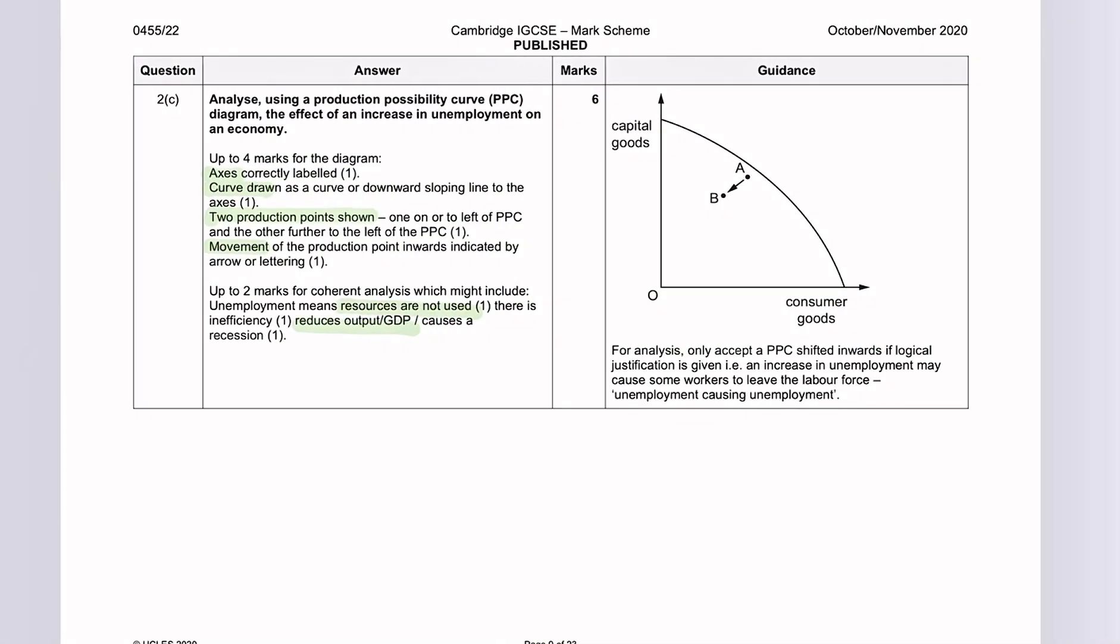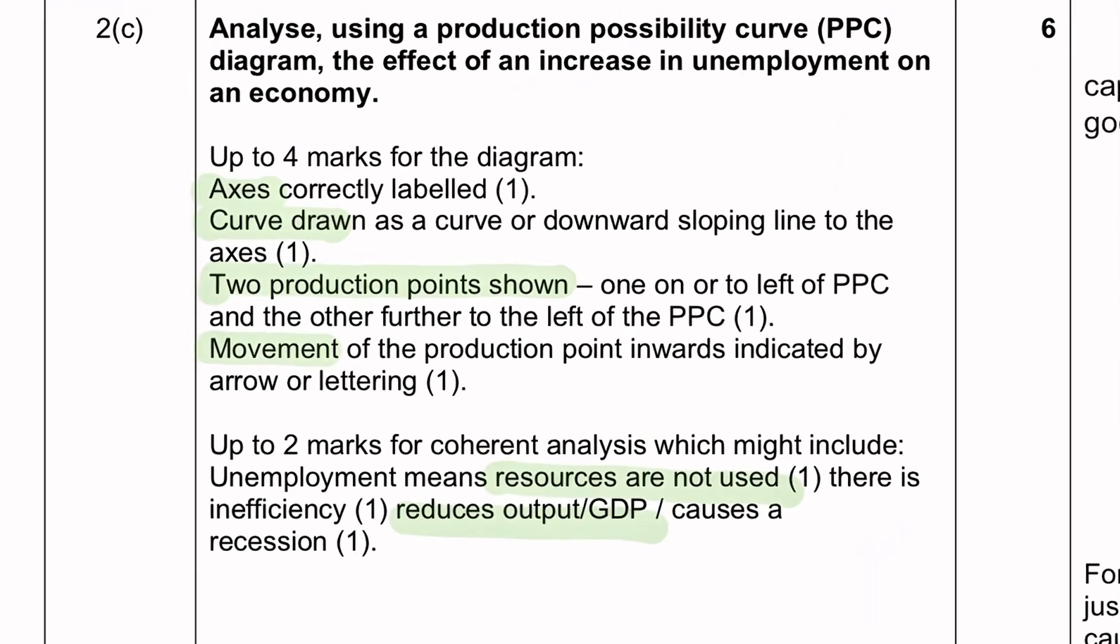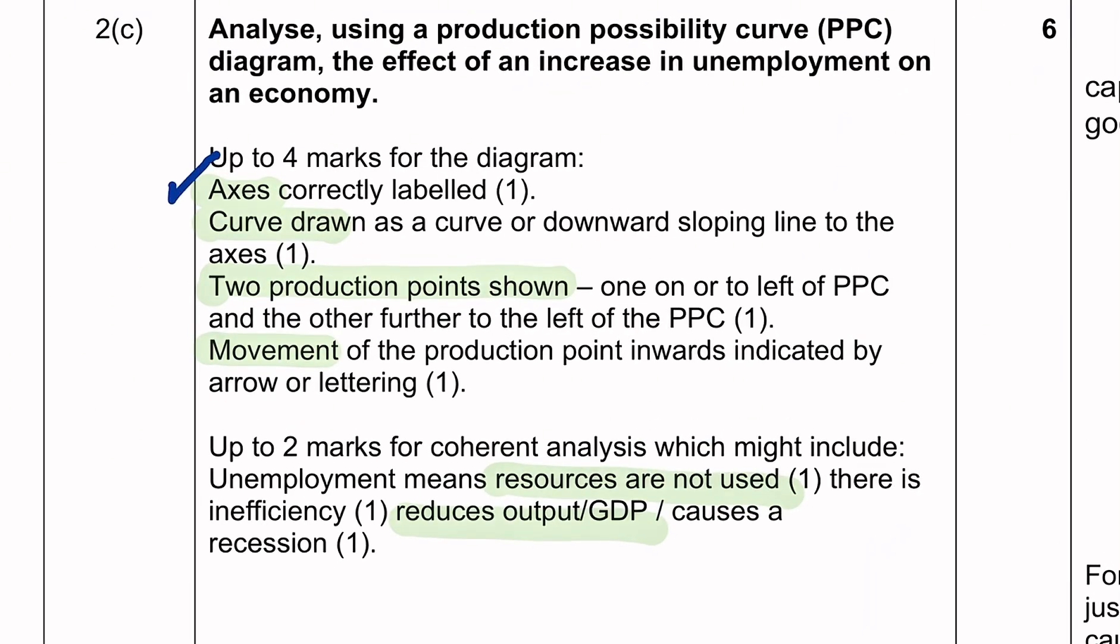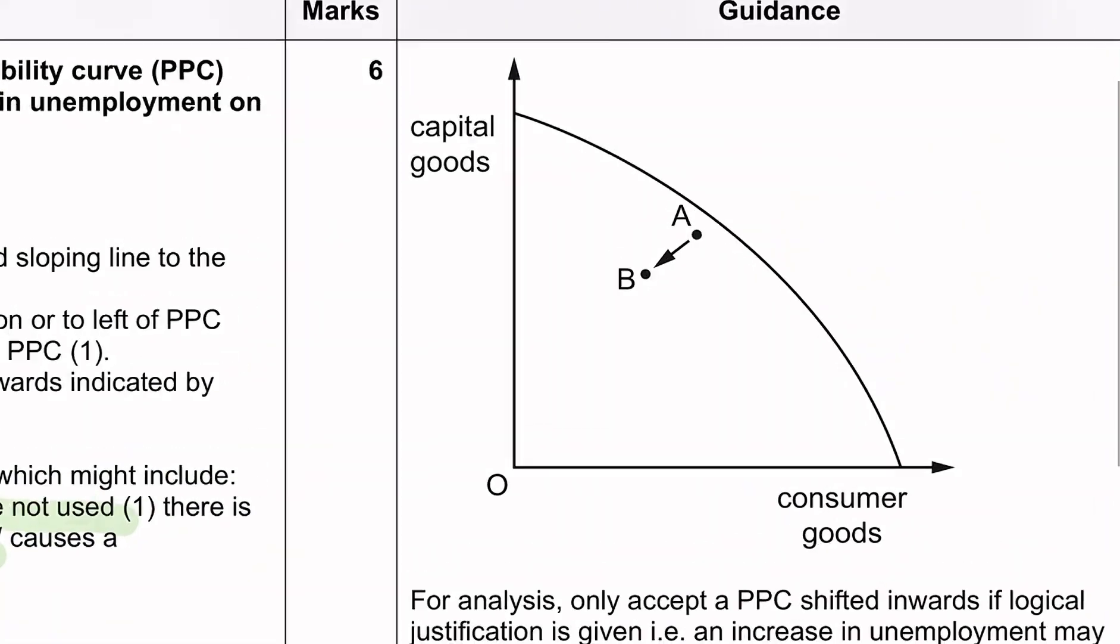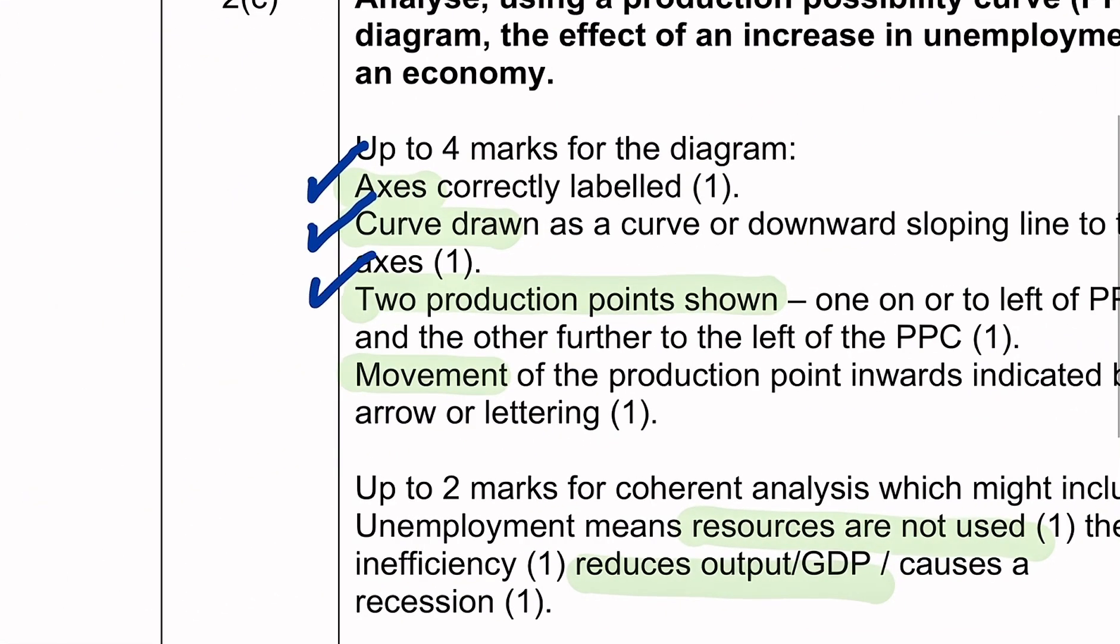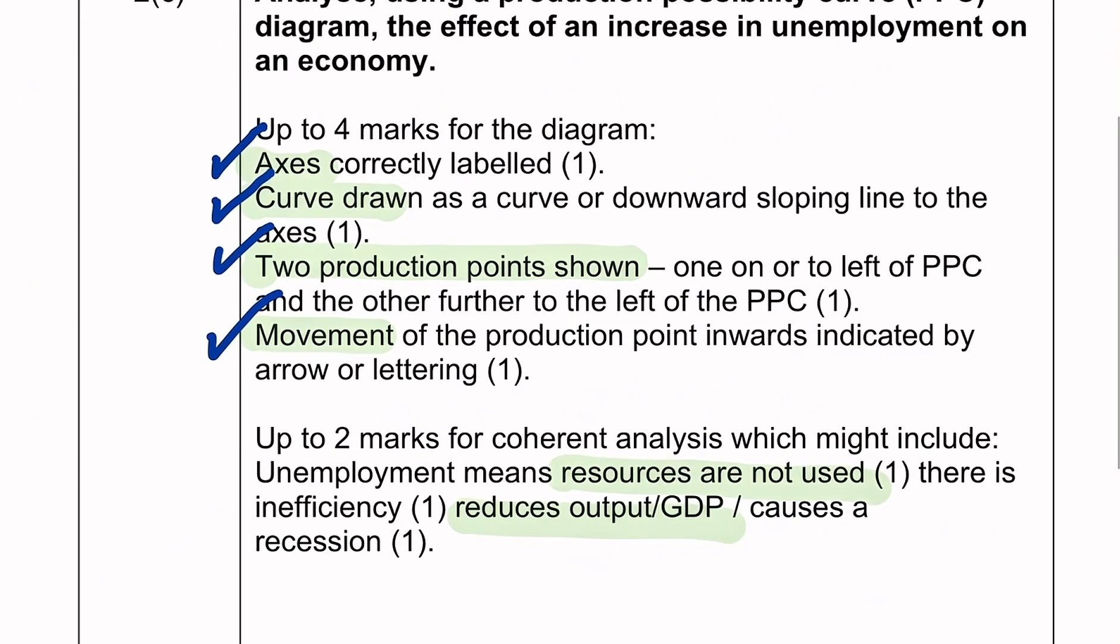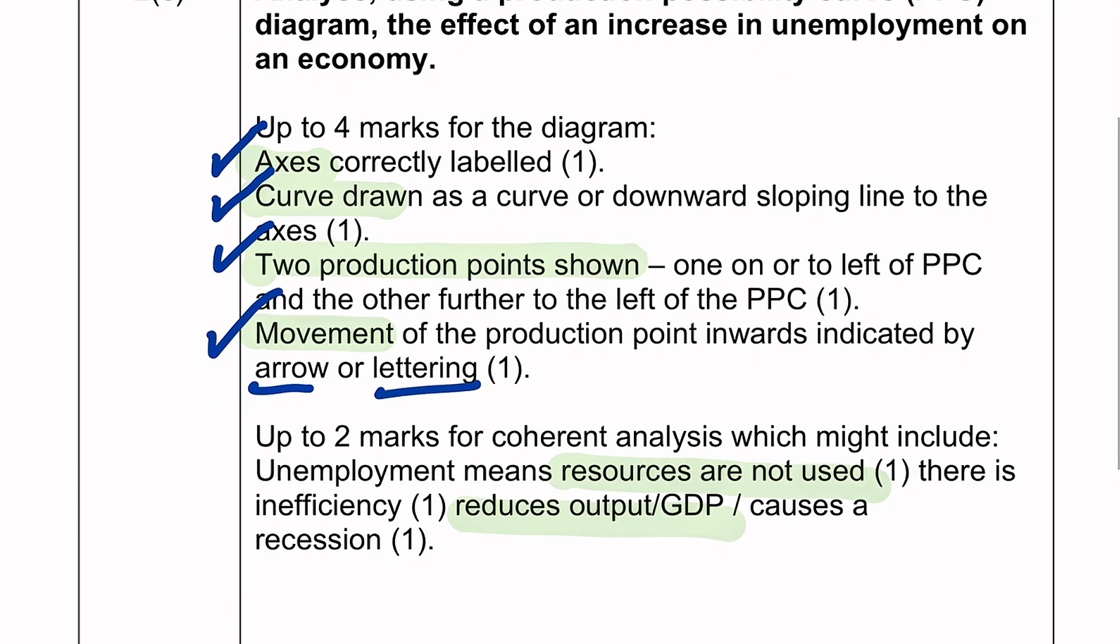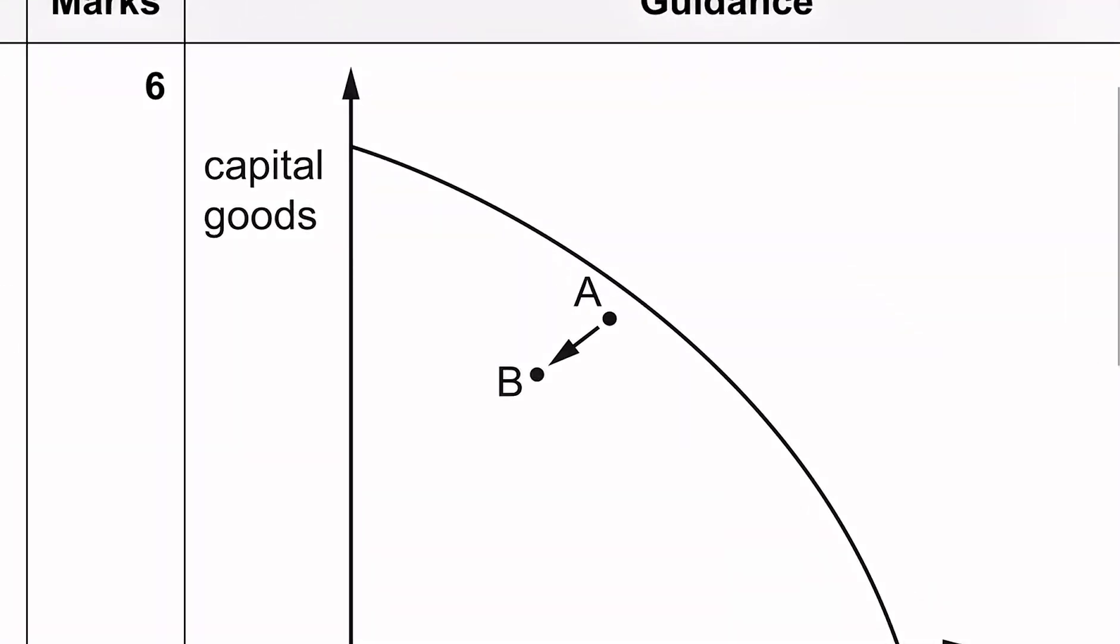Looking at the mark scheme here, as you can see, there's one mark allocated for axes, one mark allocated for the initial curve drawn, one mark allocated for the two production points, such as A and B, illustrated here. And one mark for the movement of the production point inwards indicated by an arrow or lettering. Now in this particular case, there's two. There's A to B and also there's an arrow.